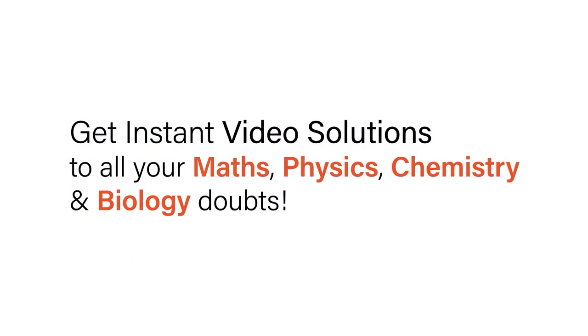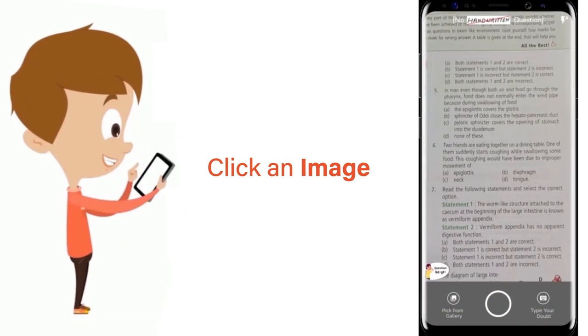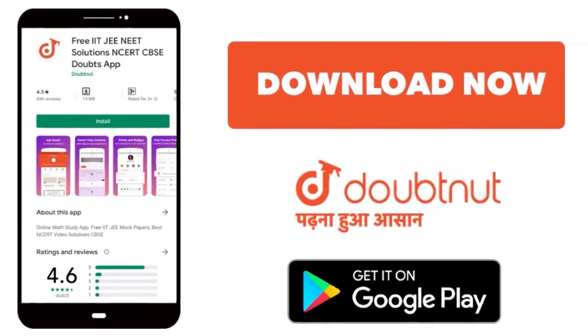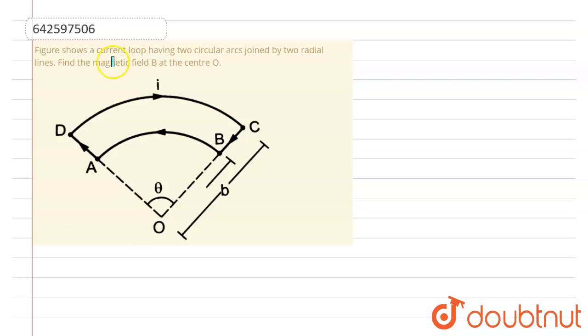With Doubtnut, get instant video solutions to all your math, physics, chemistry, and biology doubts. Just click the image of the question, crop the question, and get instant video solution. Download Doubtnut app today. In this given figure, we have to find the magnetic field B at the center O.